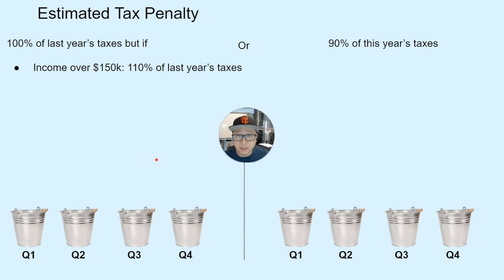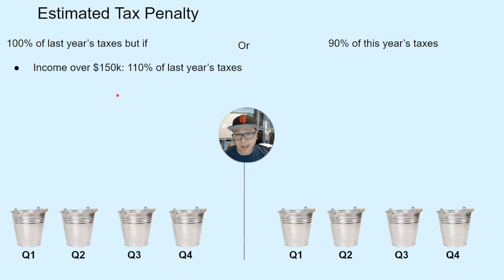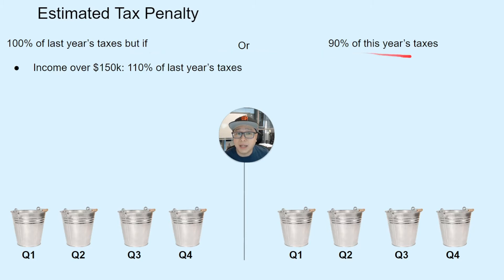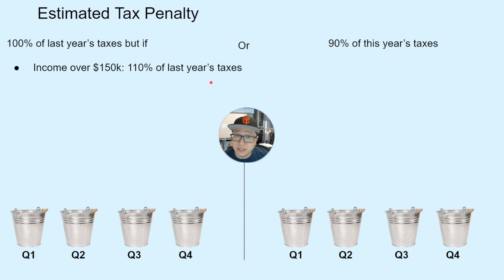The IRS says you can pay 100% of last year's taxes or 90% of this year's taxes. But if you use the 100% of last year's taxes method, and your income is over $150,000, you have to use 110% of last year's taxes instead.